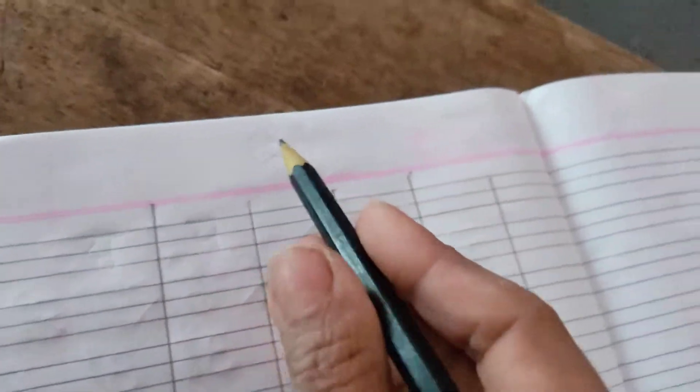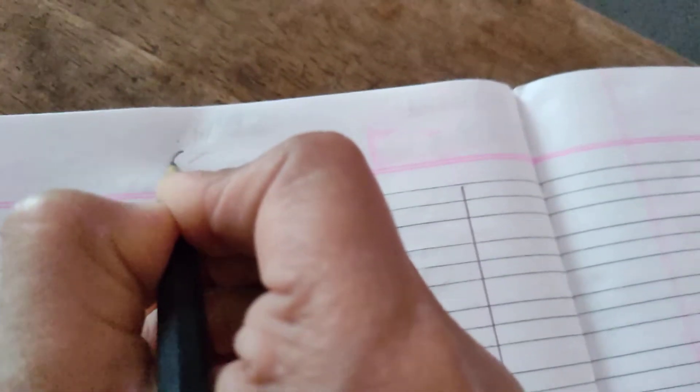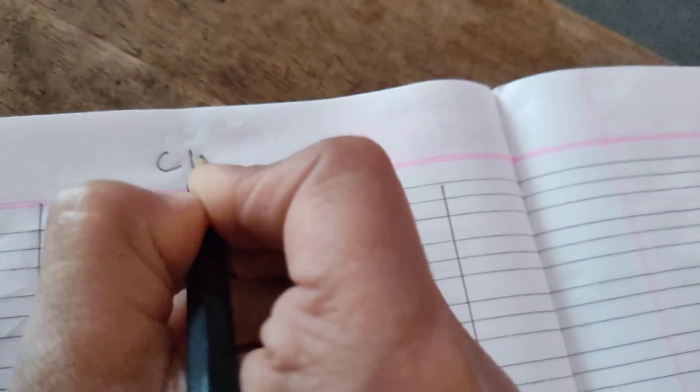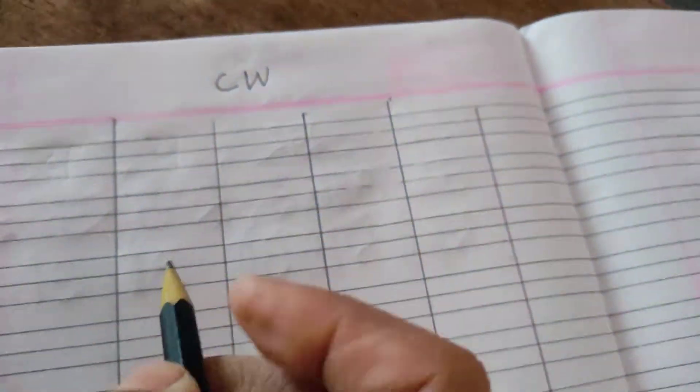Today we are writing next letter. First you write down date here, then CW, okay.